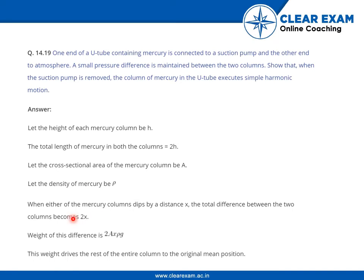When either of the mercury columns dips by a distance x, the total difference between the two columns becomes 2x. The weight of this difference column is 2Ax·rho·g, and this weight drives the rest of the entire column back to the original mean position.